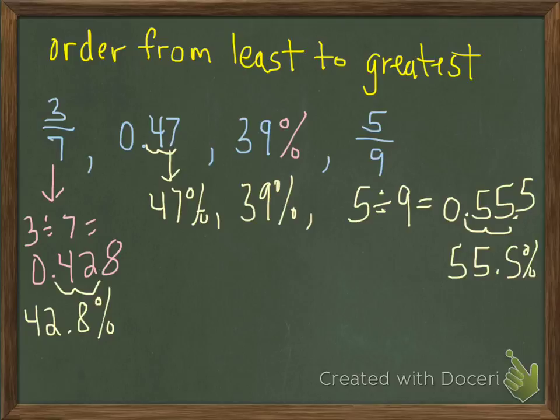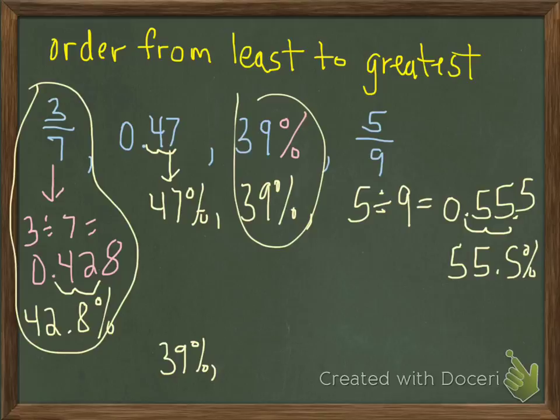Now that they're all in the percent form, you could easily arrange them least to greatest. You see this one, 39%. That's our smallest percent. And next, it looks like 3 sevenths, because that's 42%, 42.8. So 3 sevenths is our next greatest.